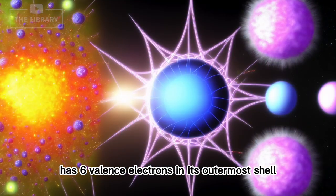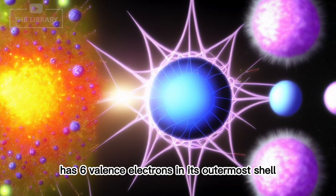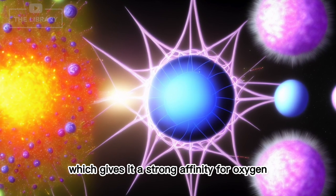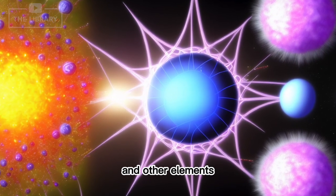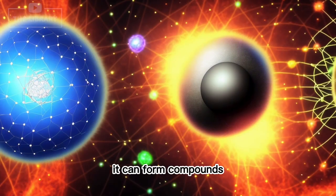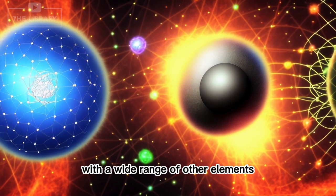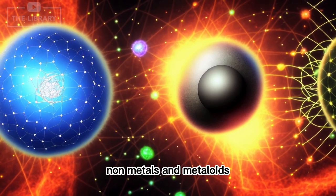The selenium atom has six valence electrons in its outermost shell, which gives it a strong affinity for oxygen and other elements. It can form compounds with a wide range of other elements, including metals, non-metals, and metalloids.